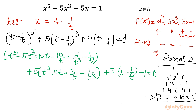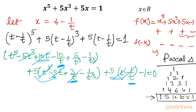Now let us see which terms cancel. The 5t cubed terms cancel with minus 5t cubed. The 10t plus 5t gives 15t with a negative sign, so those three t-terms cancel. Similarly, minus 10 over t, 15 over t, and minus 5 over t also cancel to zero. The 5 over t cubed terms cancel with minus 5 over t cubed. What is left ultimately is t power 5 minus 1 over t power 5 equal to 1.